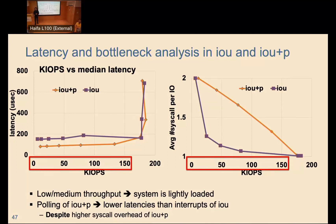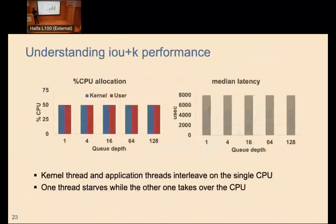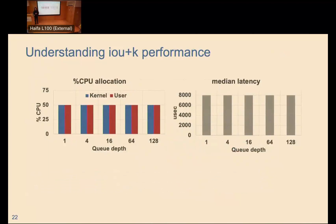Question: Were your results hardware-independent? Did you try different CPUs? Answer: We tried a subset of tests on different CPUs and drives. The numbers change, but the behavior of io_uring+K with one core is consistent — we always observe the same behavior. Interestingly, we always get the same latency value regardless of CPU or drive, which suggests this is related to scheduling within the Linux kernel rather than hardware specifics.